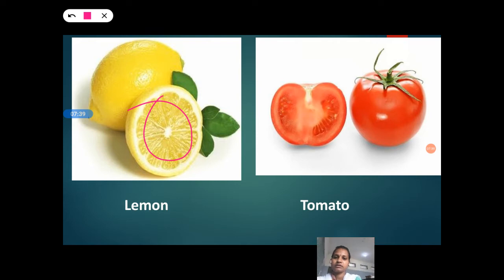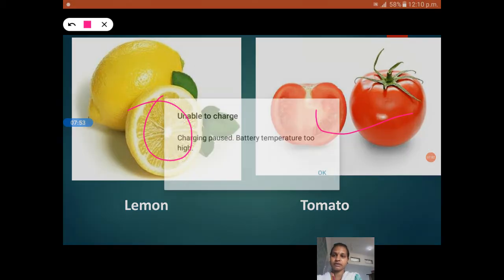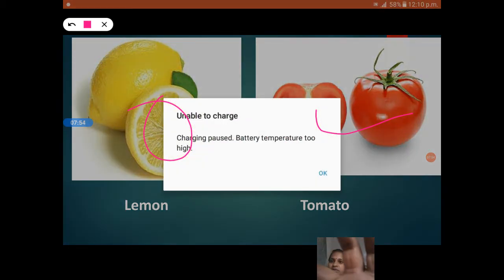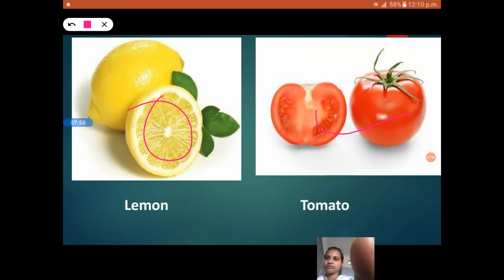What is it? It is tomato. In the tomato also we can get more seeds. Lemon and tomato are the fruits. But both these fruits are sold with vegetables. These are the fruits, but both these fruits are sold with vegetables.